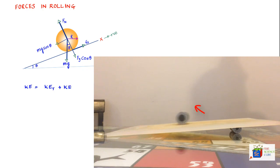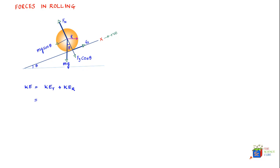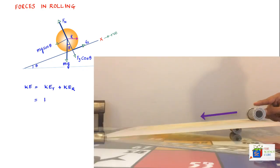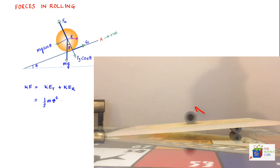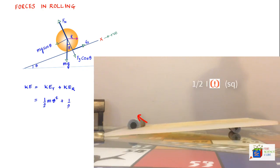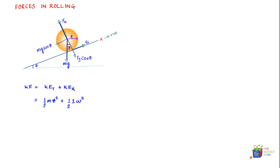On account of translation or linear motion, the kinetic energy would be ½mv², where m is the mass of the body. The kinetic energy associated with rotation would be ½Iω², where I is the moment of inertia about the axis of rotation and ω is the angular velocity. So when a body is rolling, it has two components of kinetic energy: one from linear motion and one from rotation.